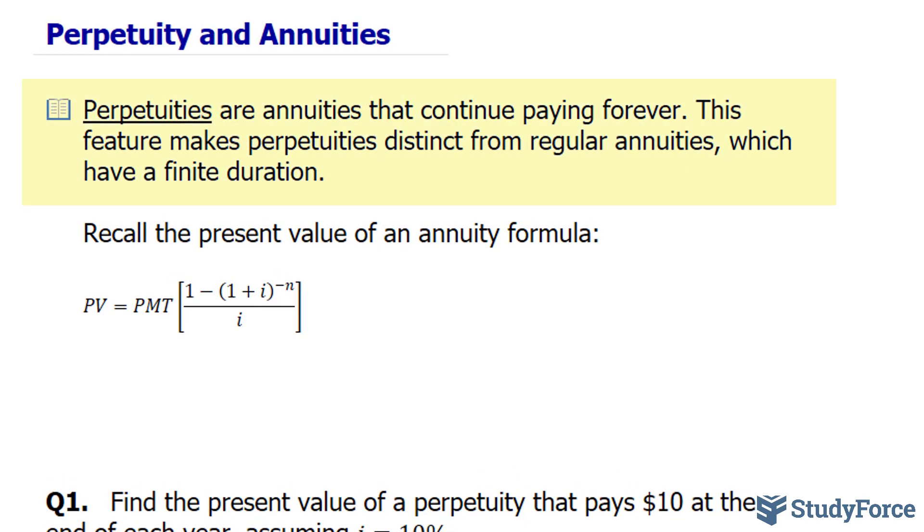Perpetuities are annuities that continue paying forever. This feature makes perpetuities distinct from regular annuities, which have a finite duration.